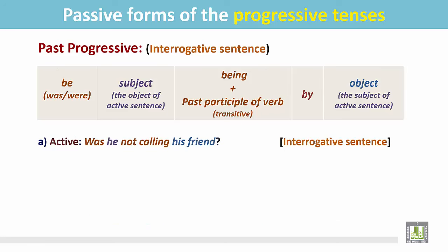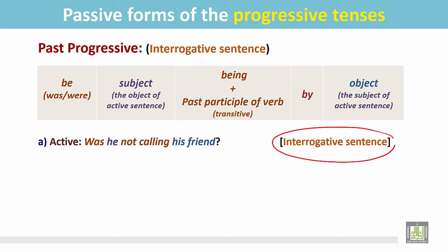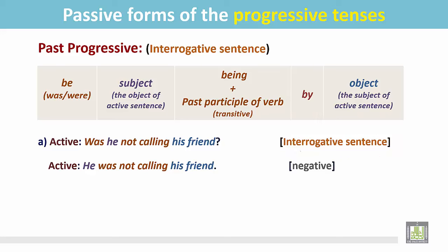Another example: 'Was he not calling his friend?' This is an interrogative sentence in the negative. First, we change this interrogative sentence into a statement. The statement is: 'He was not calling his friend.' This statement is in the negative form.